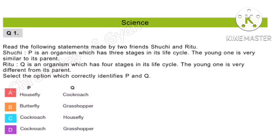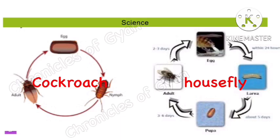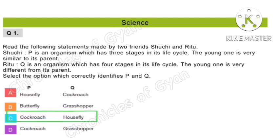Question 1. Read the following statements made by two friends, Suchi and Ritu. Suchi said: P is an organism which has 3 stages in its life cycle and the young one is very similar to its parent. Ritu says: Q is an organism which has 4 stages in its life cycle and the young one is very different from its parent. Select the option which correctly identifies P and Q. Here, Suchi is telling about cockroach and Ritu is telling about housefly. Option C is the correct answer.